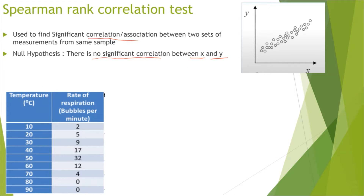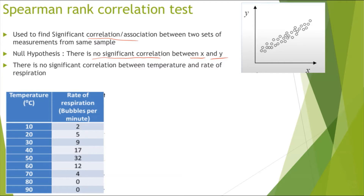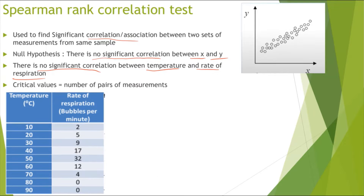For example, looking at this example where we have the temperature and the rate of respiration, you would probably hypothesize that as the temperature increases, the rate of respiration increases as well. But the null hypothesis in this case would be that there is no significant correlation between the temperature and the rate of respiration. And you also need to be aware of critical value.